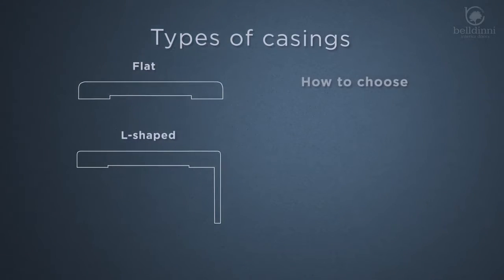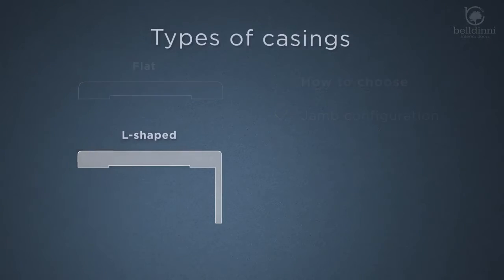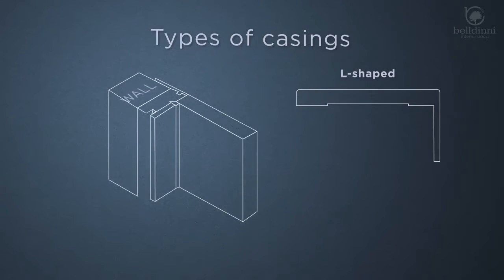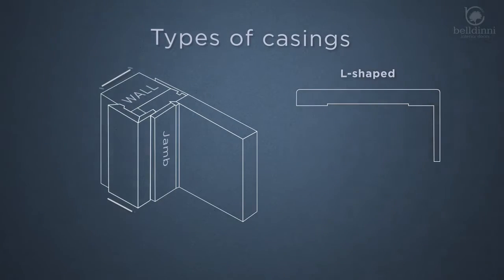Both can be used depending on the jamb configuration. With the use of Beldini telescopic L-shaped casings, the thickness of the wall covered by the doorframe can be extended to four and seven-eighths. Standard width of Beldini casings is three and a half inches.